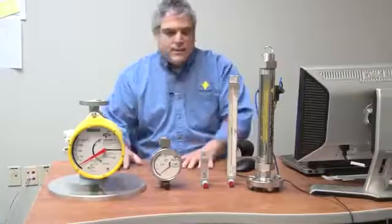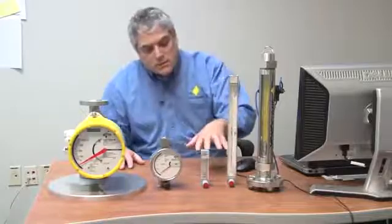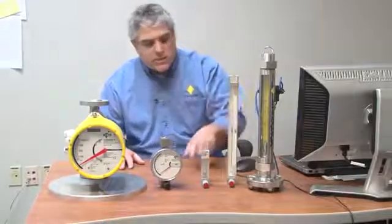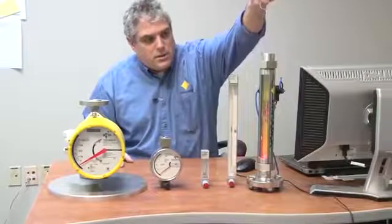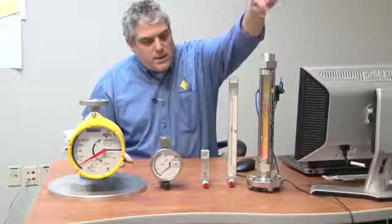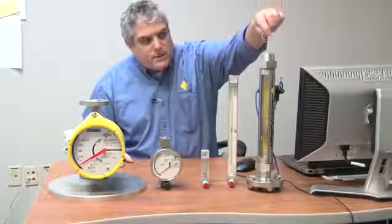We have lots of different variations. This particular line are our glass rotometers, which are great for direct measurement indication. You can look inside and see, actually as the material goes by, you can see the float increase with the increase in flow and come back down as the flow decreases.